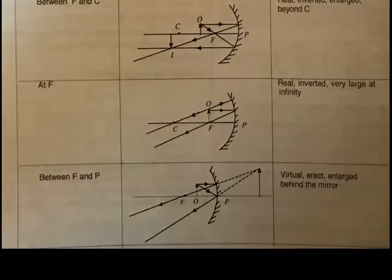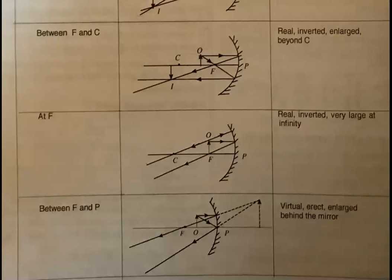This last situation is very important. If the object lies between F and P, the ray parallel to the principal axis reflects through focus, and the ray strikes the pole and reflects symmetrically. Extending the reflected rays, they form a virtual image. It is not formed by converging rays but by diverging rays — therefore virtual, erect, and enlarged. When the object lies between the pole and focus, the image is virtual, erect, and enlarged.